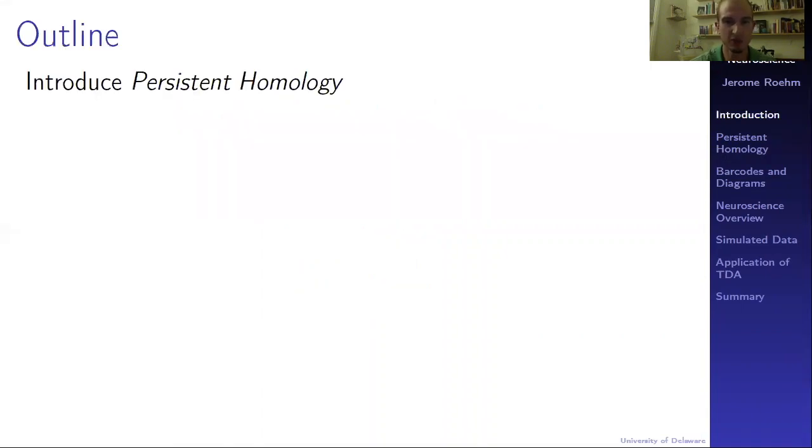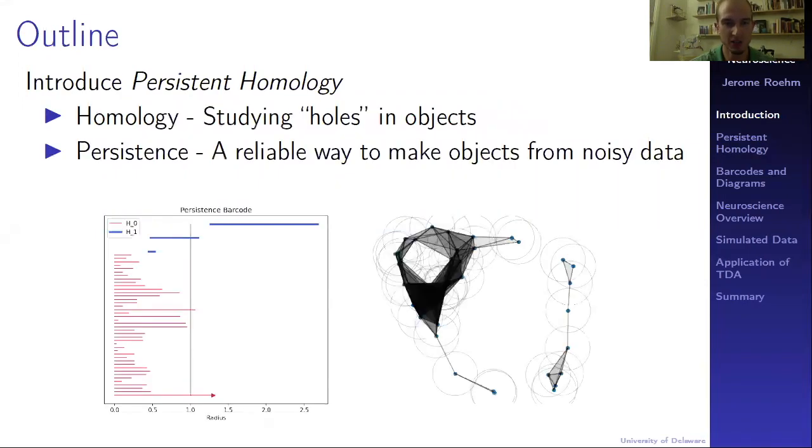First, I will introduce you to an idea called persistent homology. Breaking that term down, you can think of homology as studying holes in objects. For example, there is a hole in the shape on the right. Persistence is a reliable way to construct objects from noisy data. Persistent homology produces nice barcode plots, like the one here on the left, that we can analyze. More on this later.